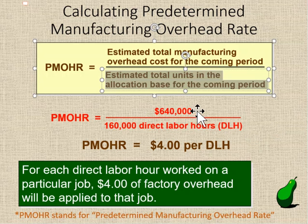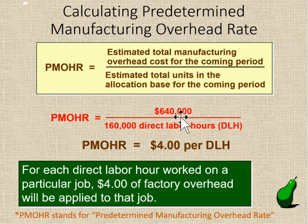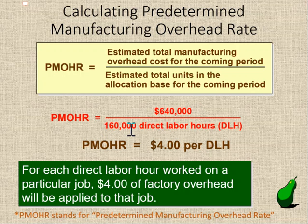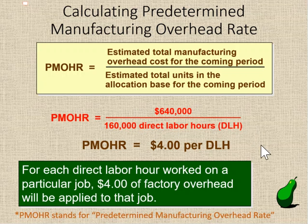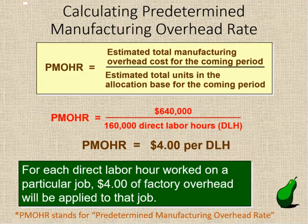Here's an example. The company had $640,000 of total estimated manufacturing overhead for the coming period and 160,000 estimated direct labor hours. Taking $640,000 divided by 160,000 direct labor hours gives you $4 per direct labor hour. So if a job required 10 labor hours, we would take 10 times $4 to get the overhead applied to that job.